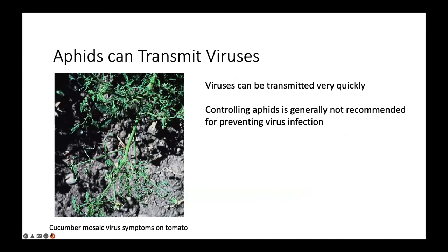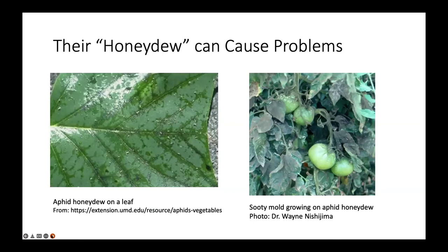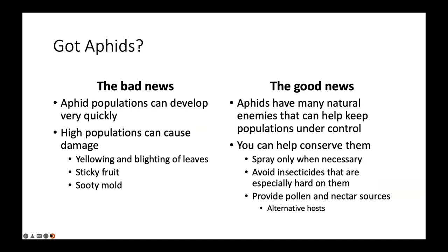Severe aphid populations can cause leaf yellowing and blighting. Aphids can also transmit viruses — and because viruses can be transmitted very quickly after only a little bit of feeding, controlling aphids is generally not a recommended practice for preventing virus infection. As Tom mentioned, their honeydew causes sticky leaves and fruit, and sooty mold can grow on the leaves and fruit.